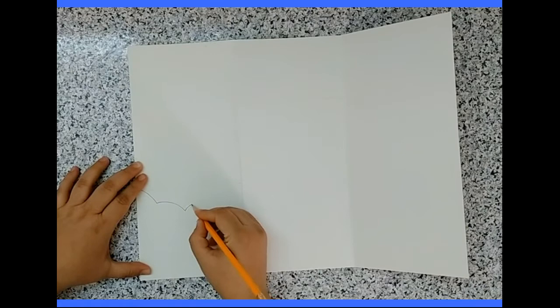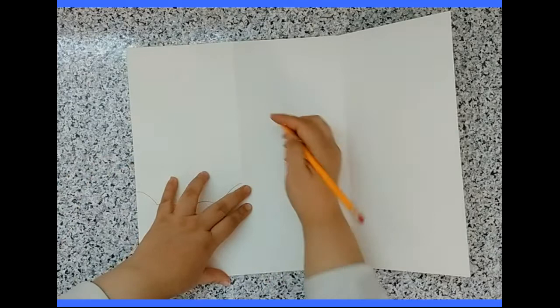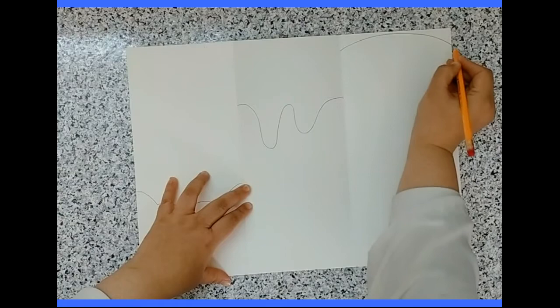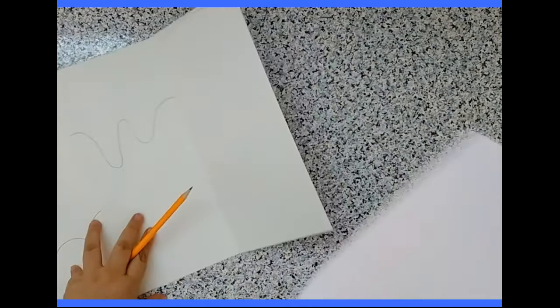Think about what a bumpy wavy zigzag or curved line could represent. The right section will be the tallest section, so start near the top, or start from the lowest section, which is the left section—completely your choice. When you reach the fold, make a vertical line so the middle section will be shorter, and the left section the shortest.